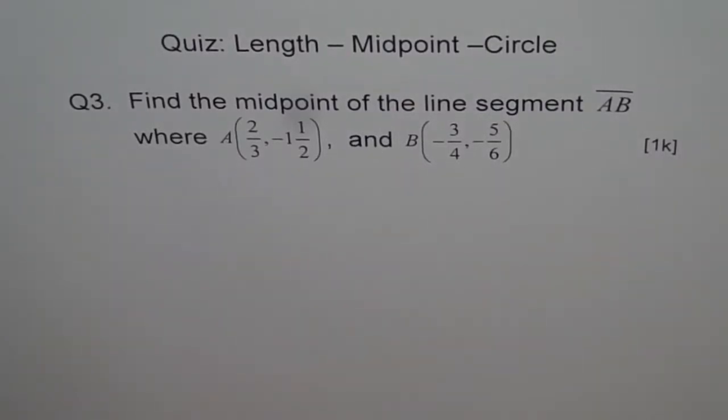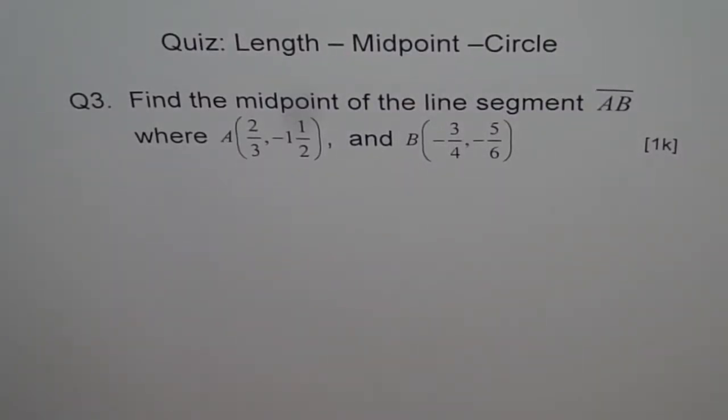Question 3. Find the midpoint of the line segment AB, where A is 2/3, minus 1 1/2, and B is minus 3/4, minus 5/6.